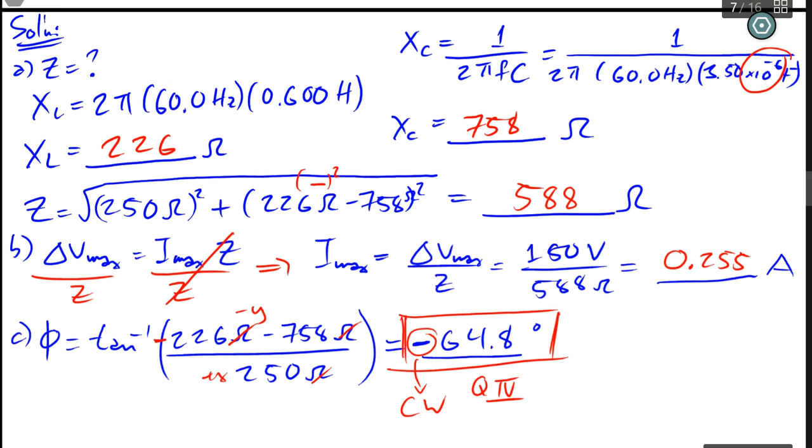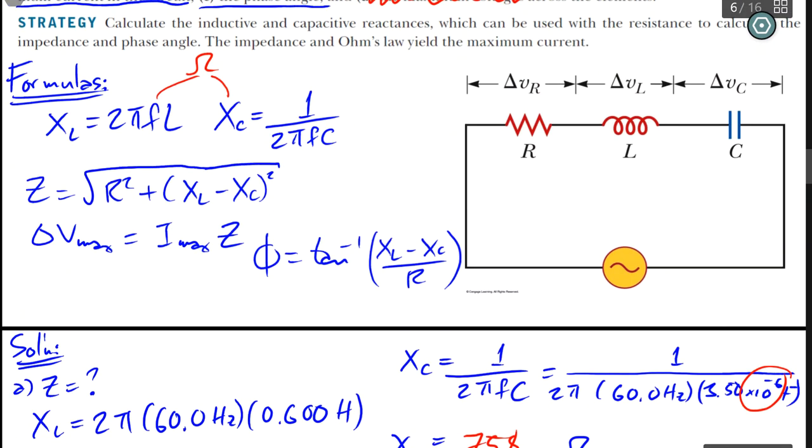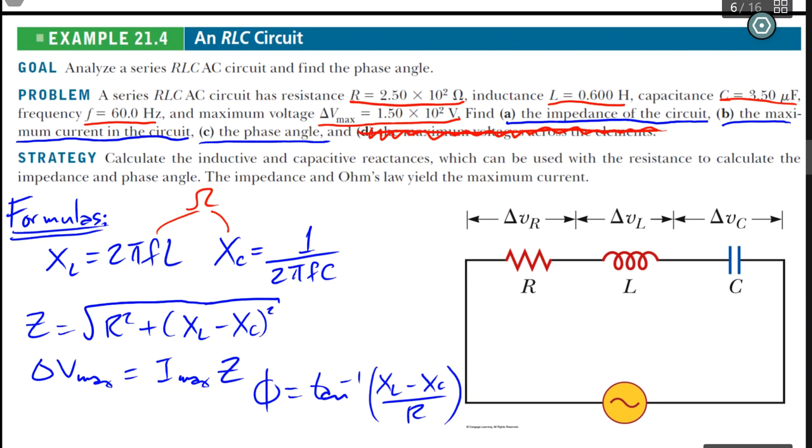So these are our final answers. I'm going to go back up here. And we're just using the find the basic properties of an RLC circuit using an AC source. Hope you all enjoyed. Bye.